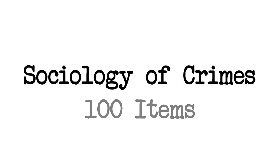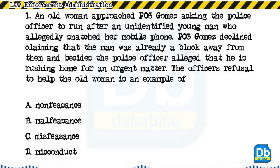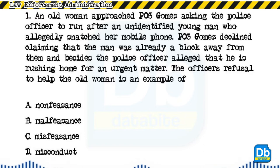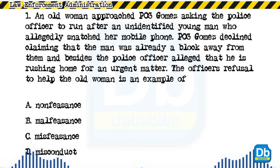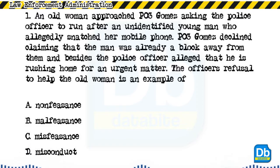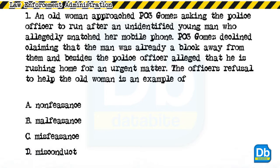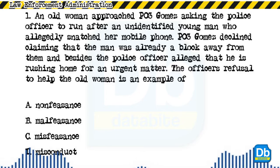Question 1: An old woman approached PO3 Gomez asking the police officer to run after an unidentified young man who allegedly snatched her mobile phone. PO3 Gomez declined, claiming the man was already a block away, and that he was rushing home for an urgent matter. The officer's refusal to help is an example of: a) non-feasance, b) malfeasance, c) misfeasance, d) misconduct.